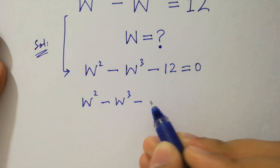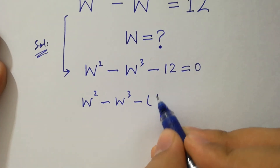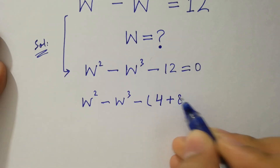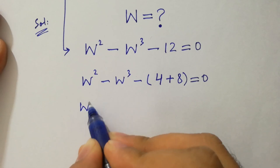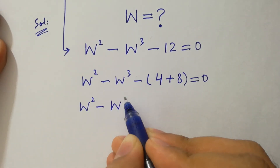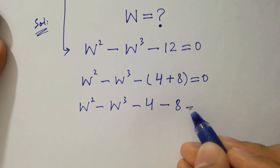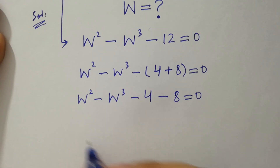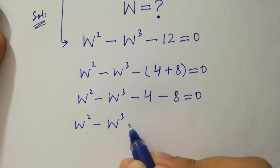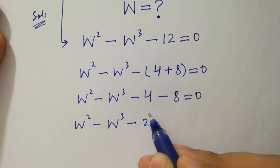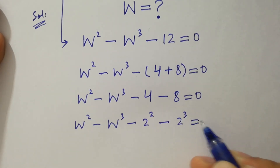W squared minus w cubed minus 12, where 12 is the same as 4 plus 8, equal to 0. So we have w squared minus w cubed minus 4 minus 8 equal to 0. Here 4 is the same as 2 squared and 8 is the same as 2 cubed, equal to 0.